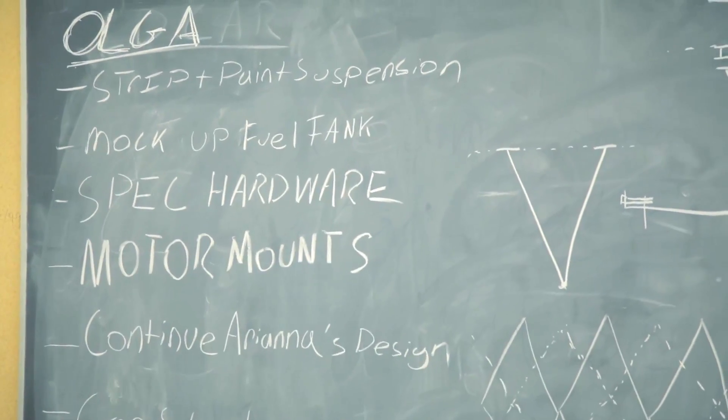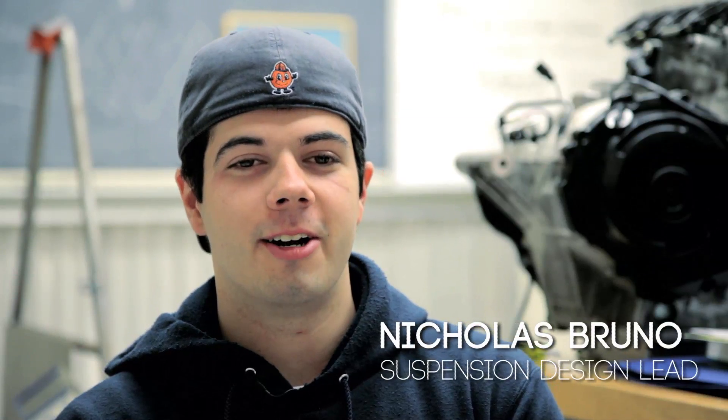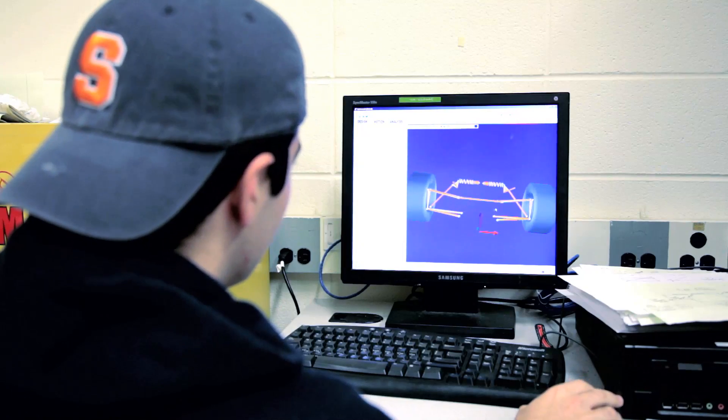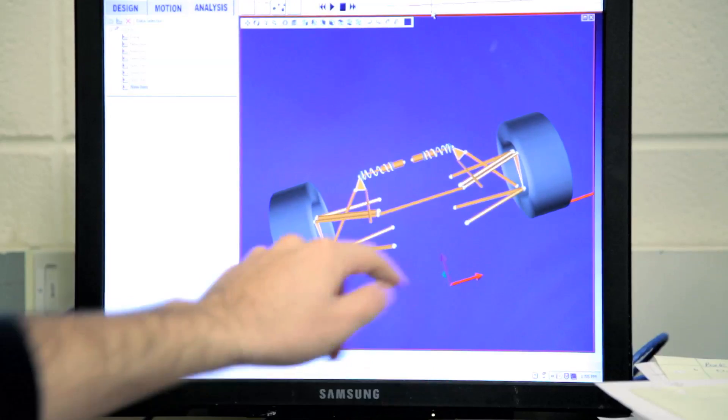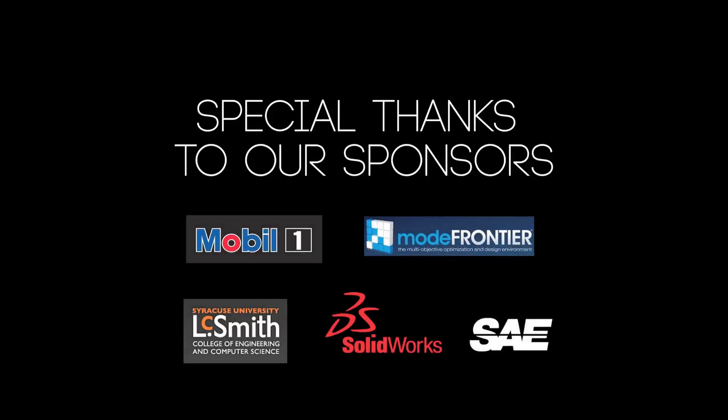The goal for this year is to get the old car running, completely do some SCCA autocrosses, do some testing on it. And also to design the new car fully in SolidWorks so that we're ready to go to manufacture next year. And then after that obviously go to competition in 2013.